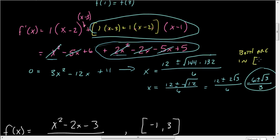Therefore, both are viable. That means that both answers are good. So let C equal (6 ± √3)/3. That's it. That's our answer.